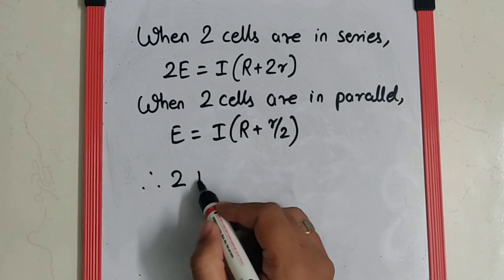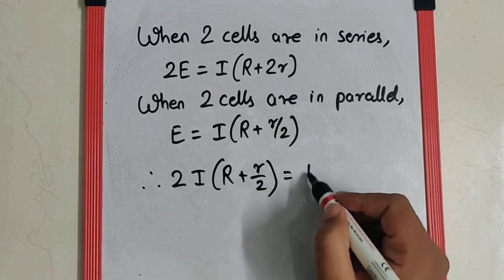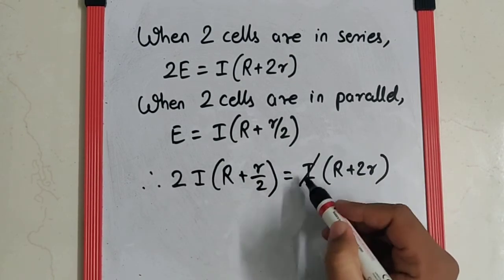So we get this as 2 times I bracket R plus r by 2 equals I times R plus 2r. So I also gets cancelled.